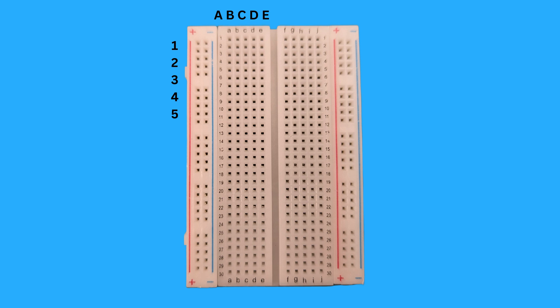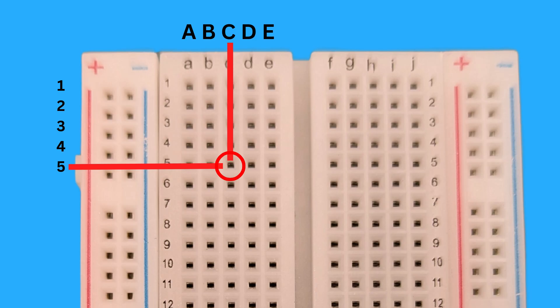These labels are super helpful when following a circuit diagram, as they give you exact spots for placing components. For example, if the instructions say to place a wire in hole C5, you know that's where column C and row 5 intersect.